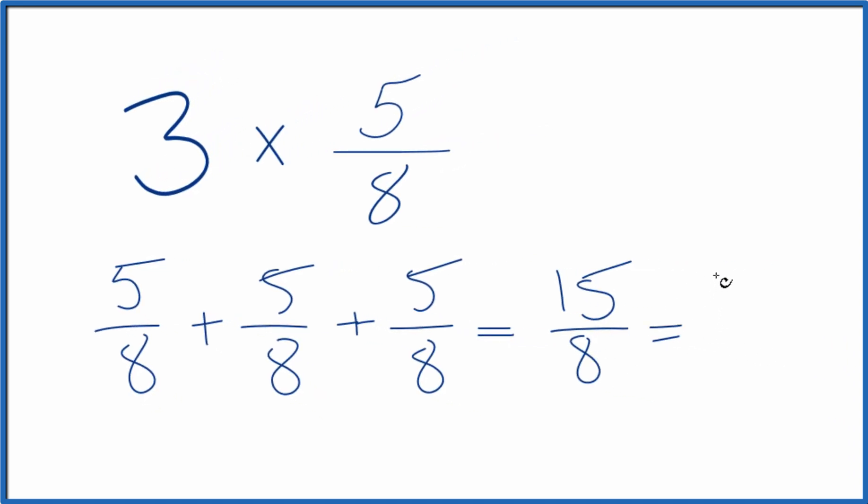8 goes into 15 just one time. 1 times 8, that's 8. We'd have 7 left over. Bring the 8 across. So 15 eighths is equal to the mixed number 1 and 7 eighths.